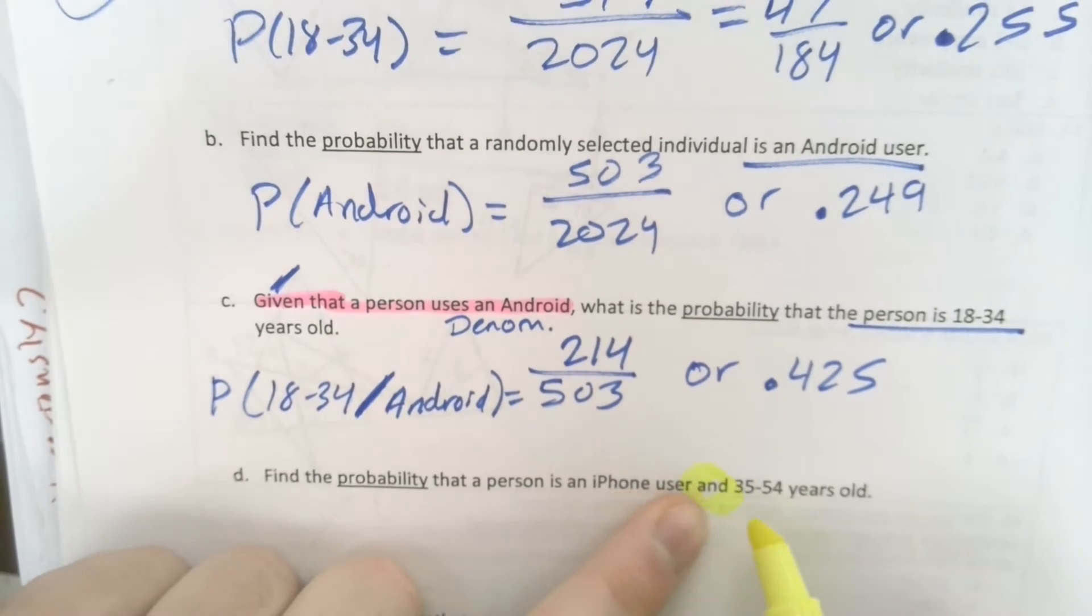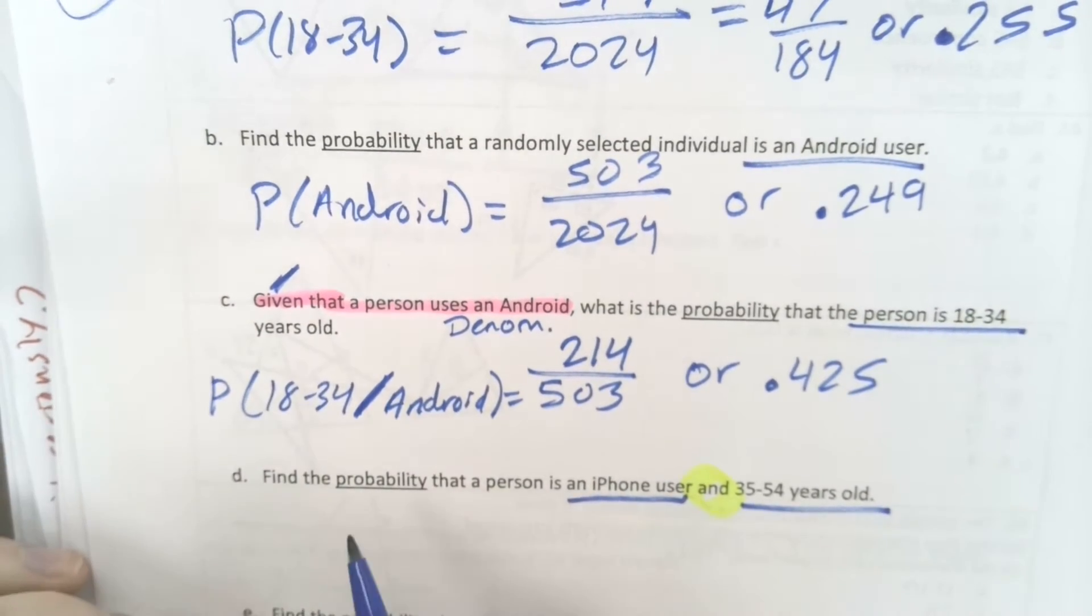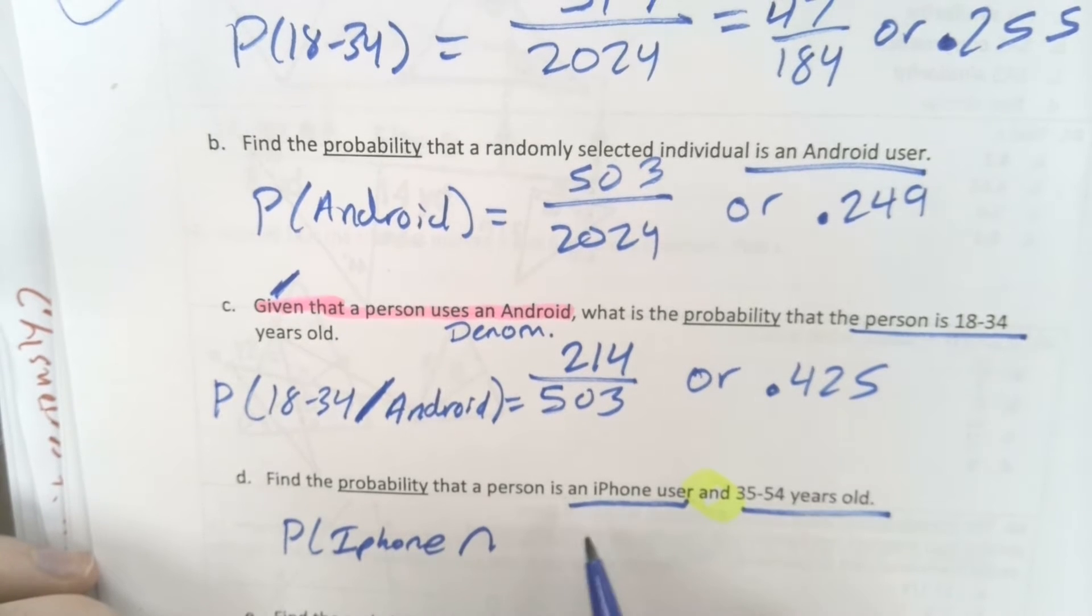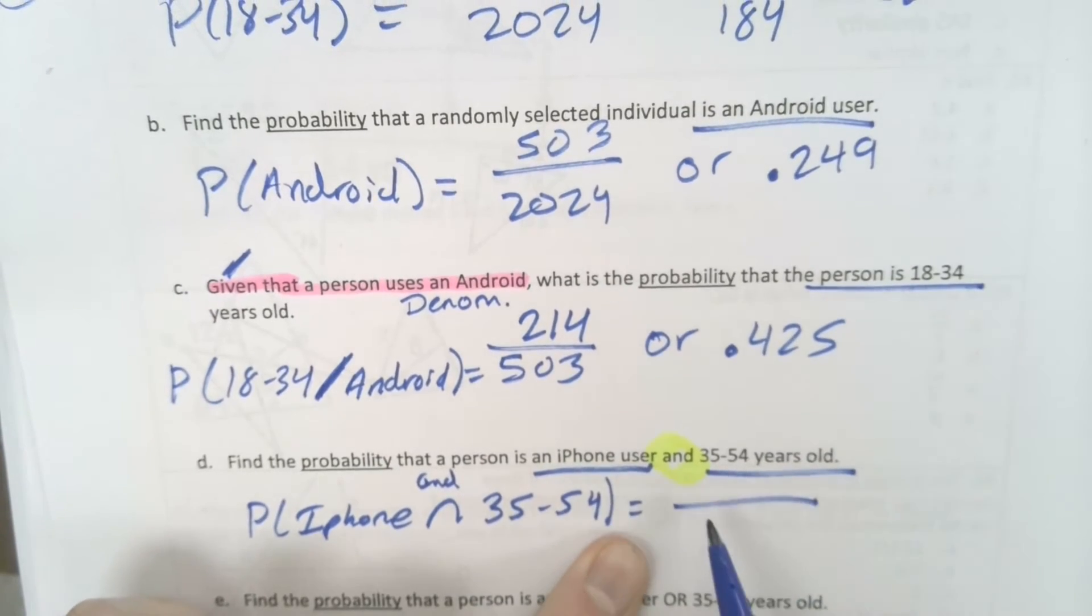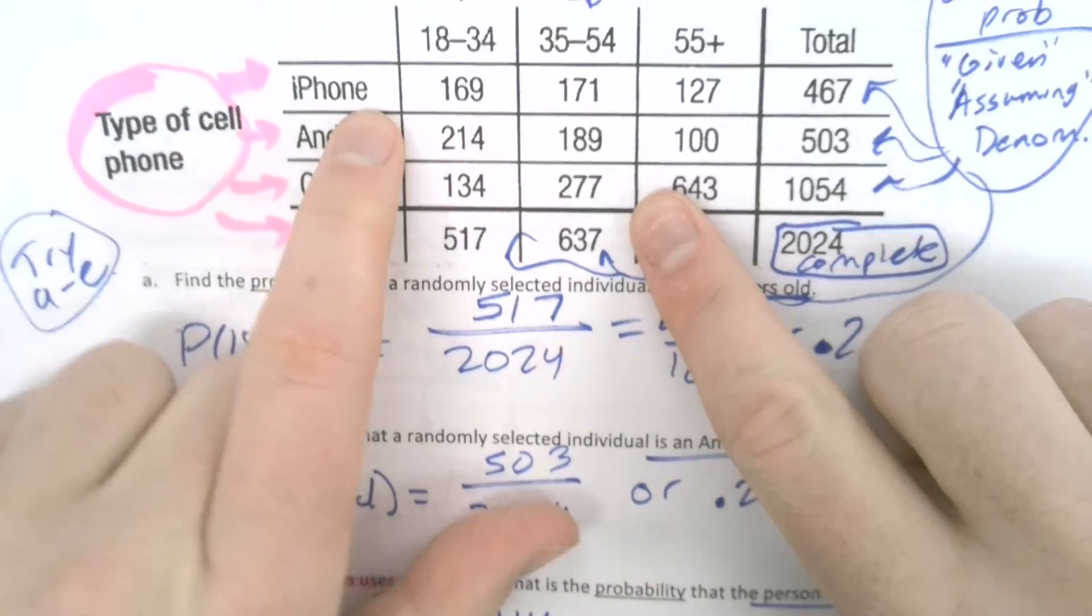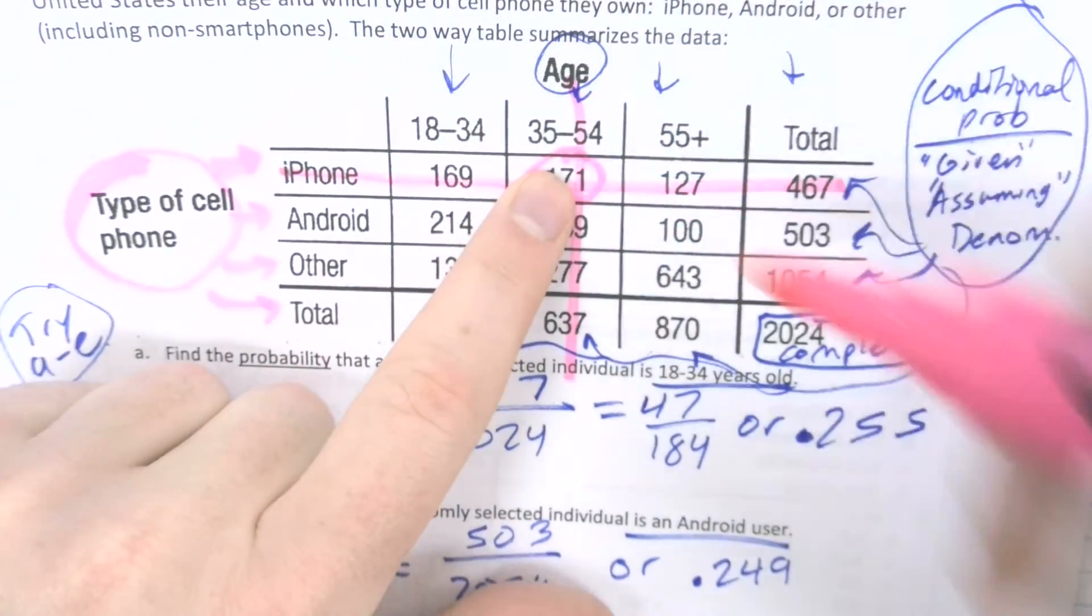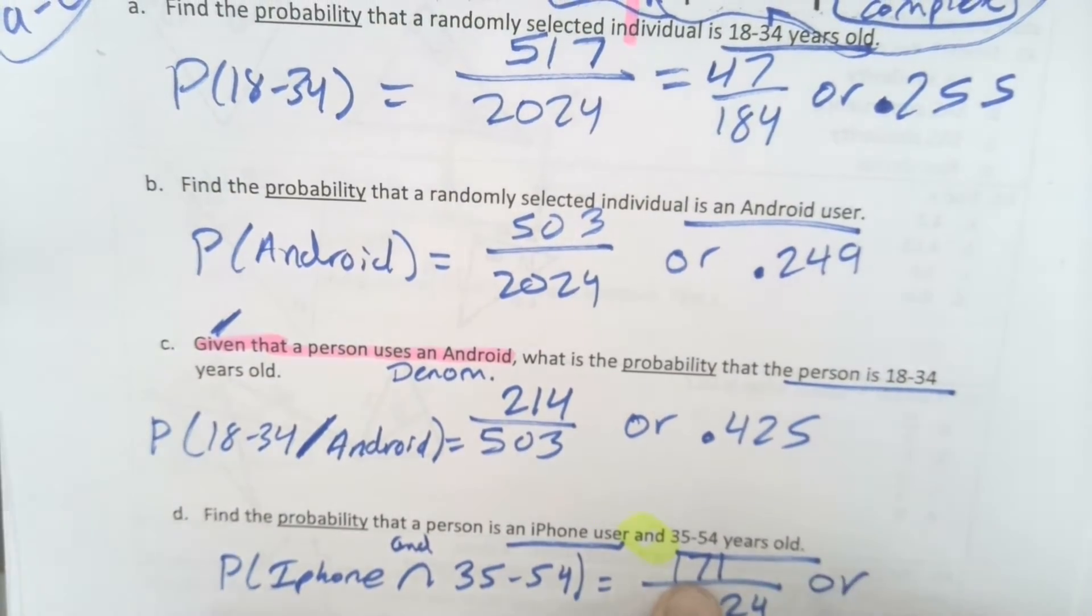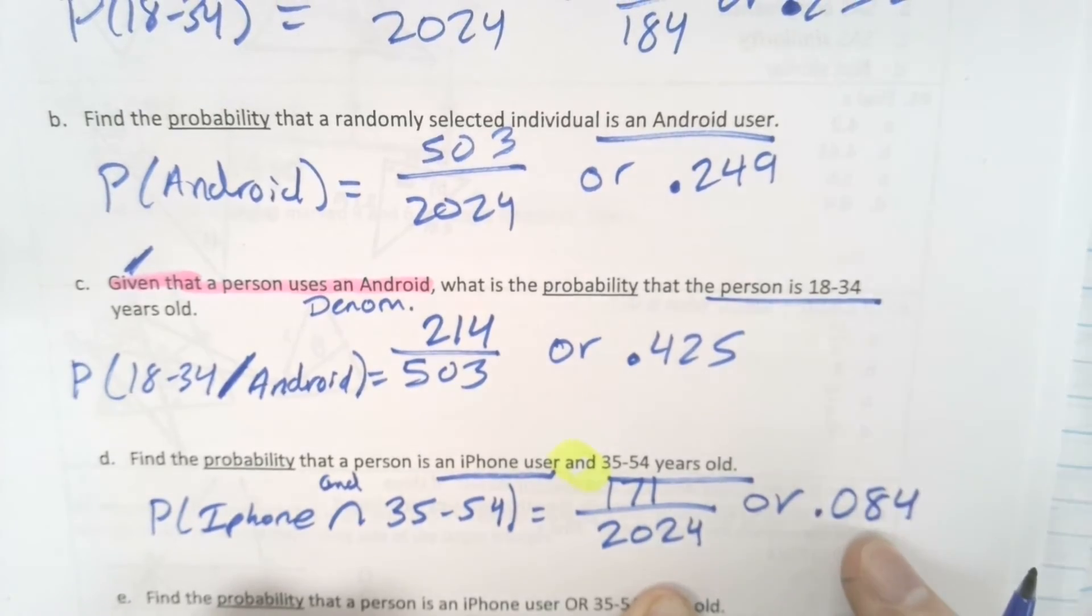Now, be careful about the wording here. Find the probability that a person is an iPhone user and 35 to 54. Okay? So now, once again, we're looking out of the total number of people. So probability that iPhone and, remember that's what that intersection means, 35 to 54. So we're not given anything. So we're out of 2024. And then iPhone and 35 to 54. Here's iPhone. Let's see. Here's iPhone. Here's 35 to 54. Boom. 171. And that will not reduce. 171 is a prime number. So, or it's about 0.084. Almost 8 and a half percent.